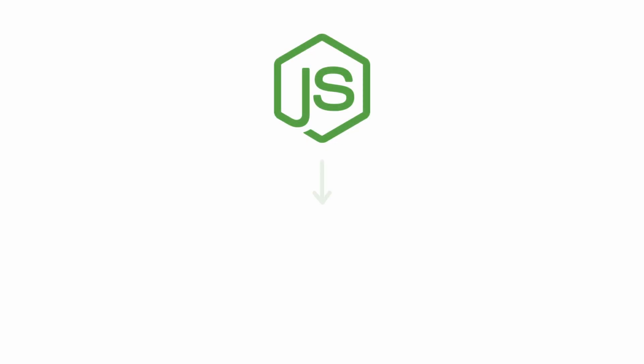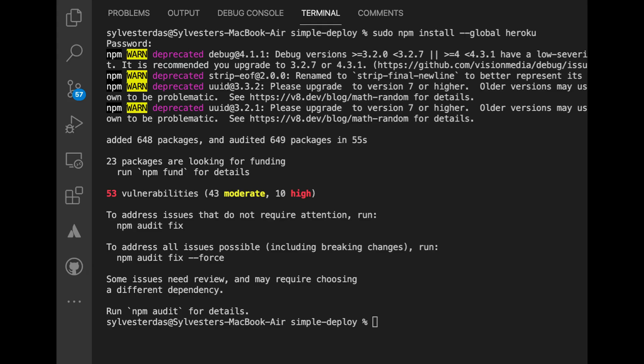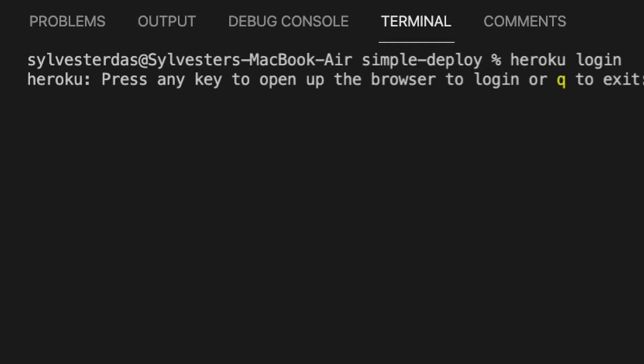Let's start with the first easy way to deploy a Node.js app using heroku.com. If you do not have an account, please create one before proceeding. In the terminal, we need to install the Heroku CLI globally. Then type heroku login and follow the process to complete authentication.